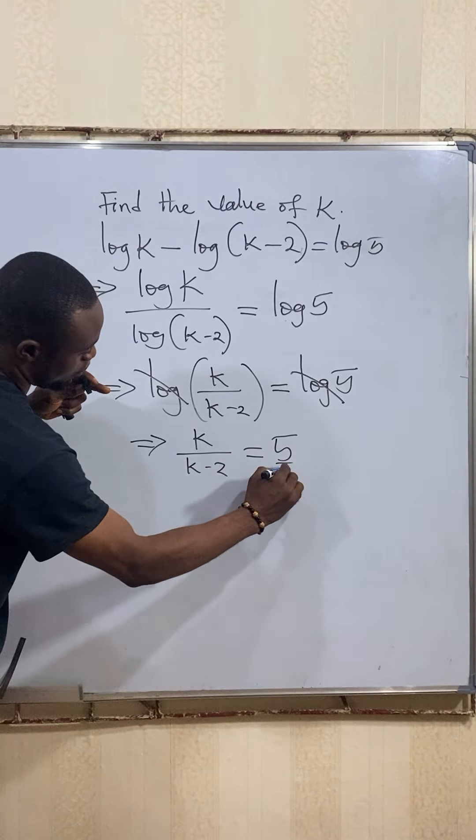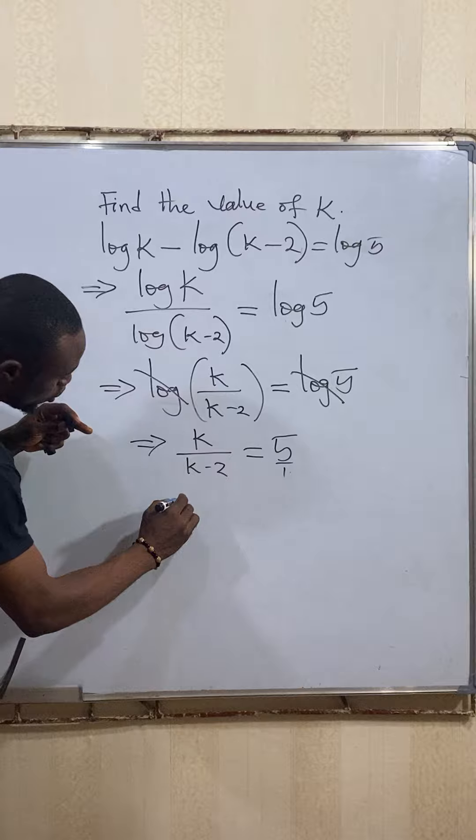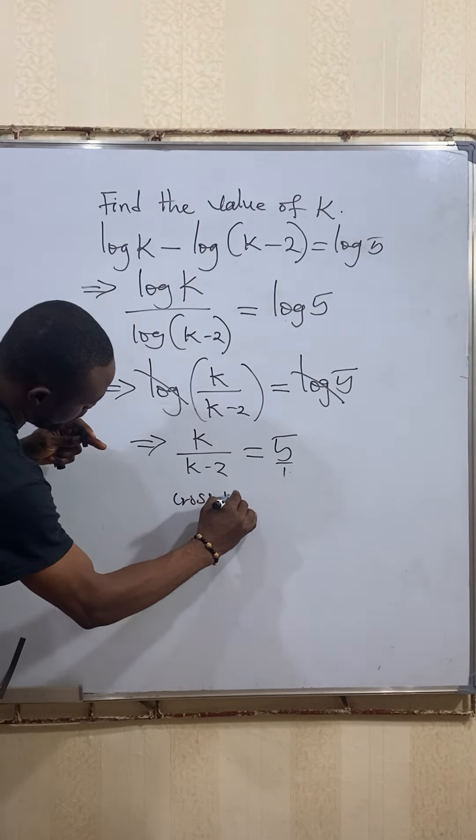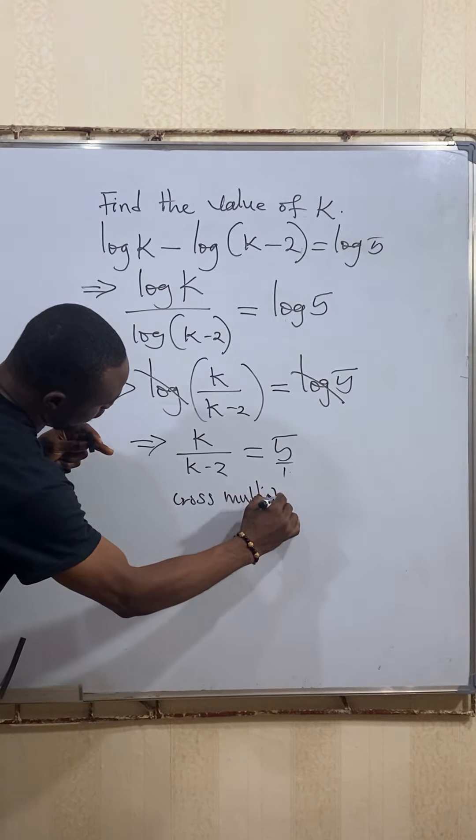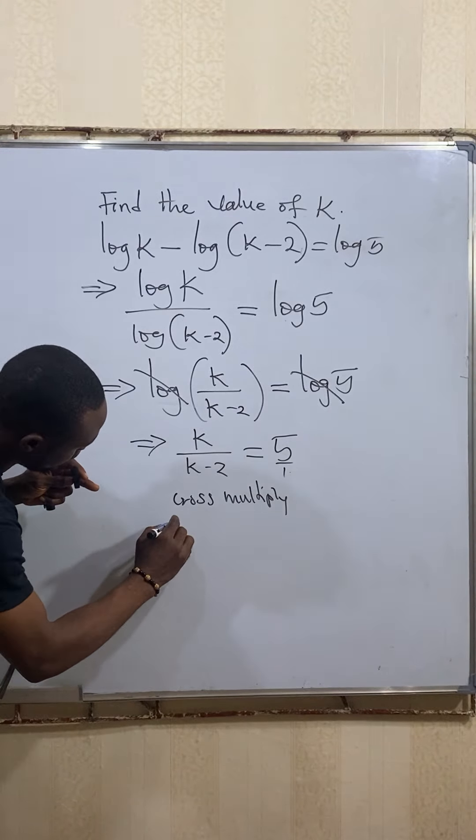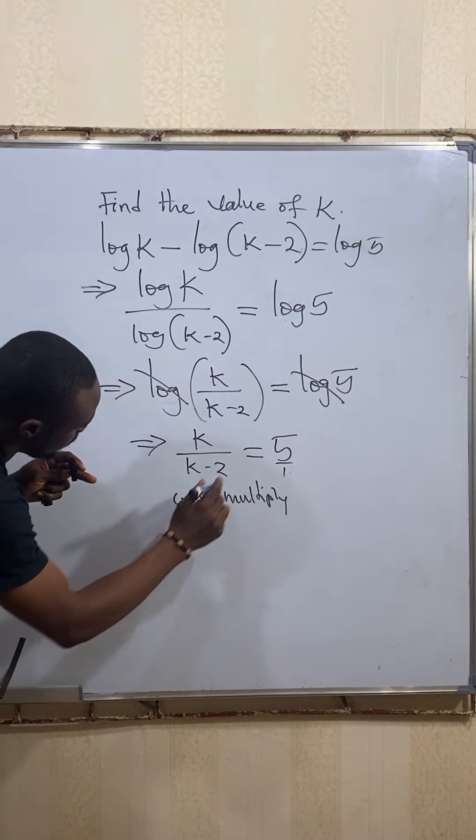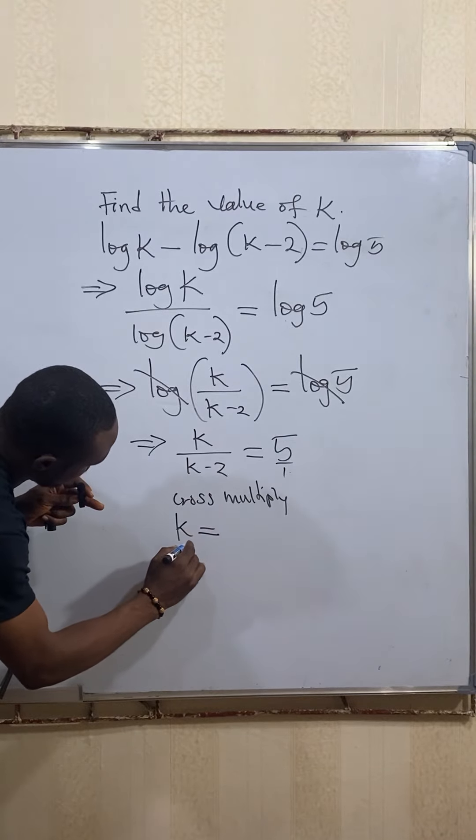We can cross multiply. So by cross multiplication we now have this times this and this times this, which gives us k to be equal to 5 open bracket k minus 2.